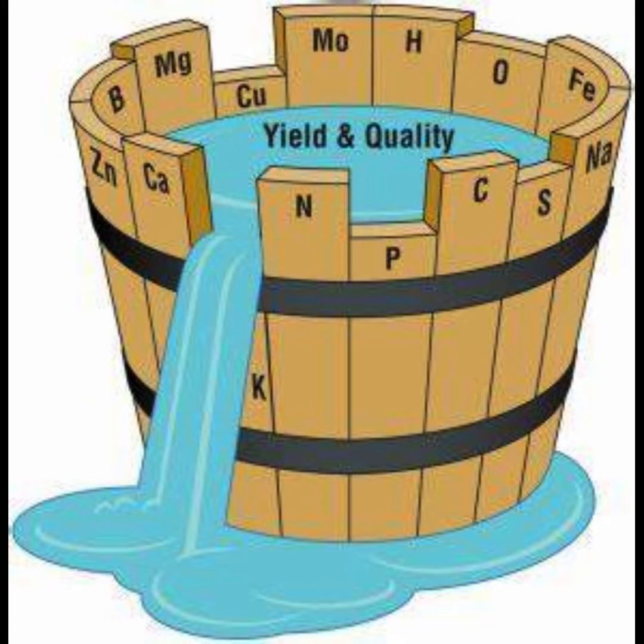Overall, Liebig's Law of the Minimum underscores the importance of a holistic and balanced approach to resource management, emphasizing that addressing the most limiting factor is crucial for optimizing productivity and sustainability in biological systems.